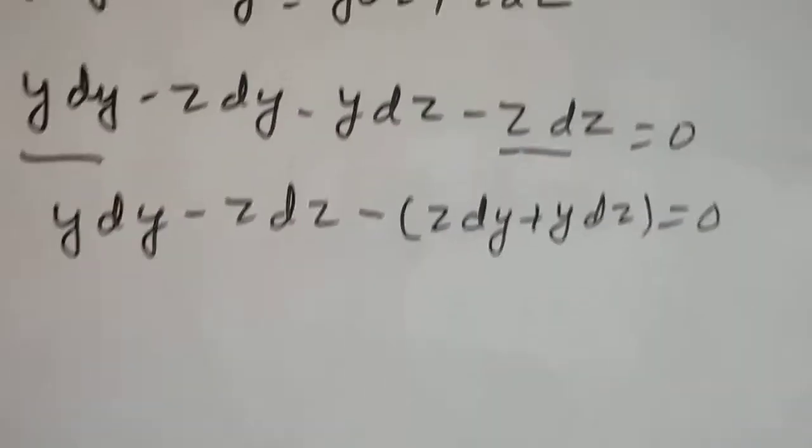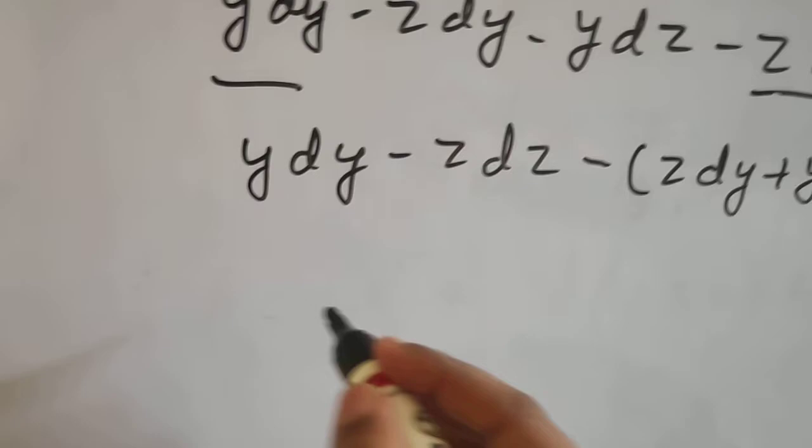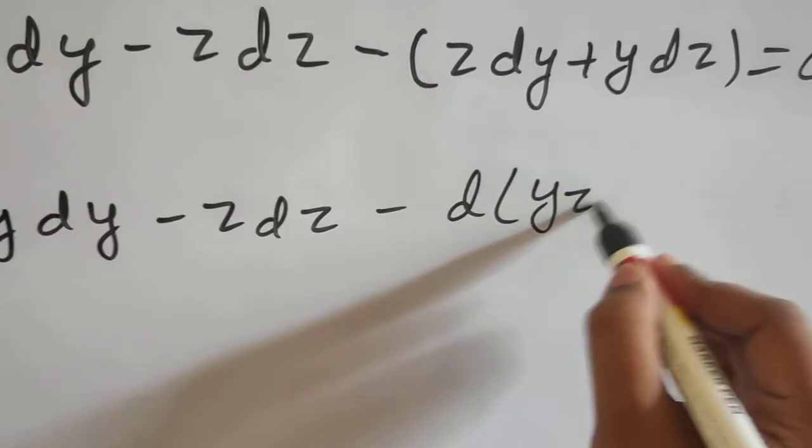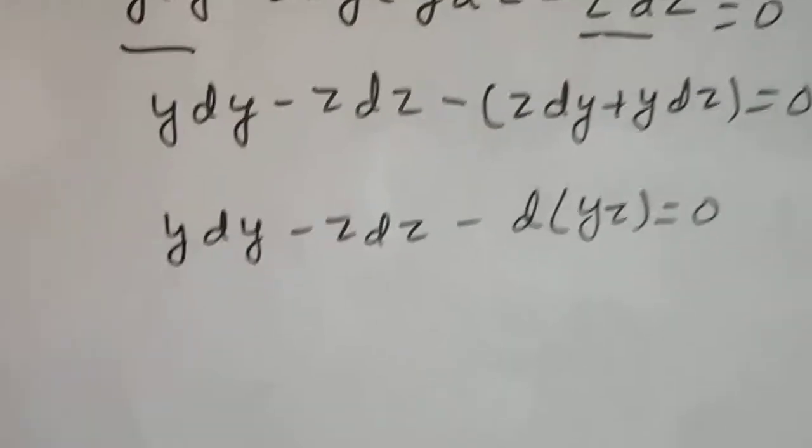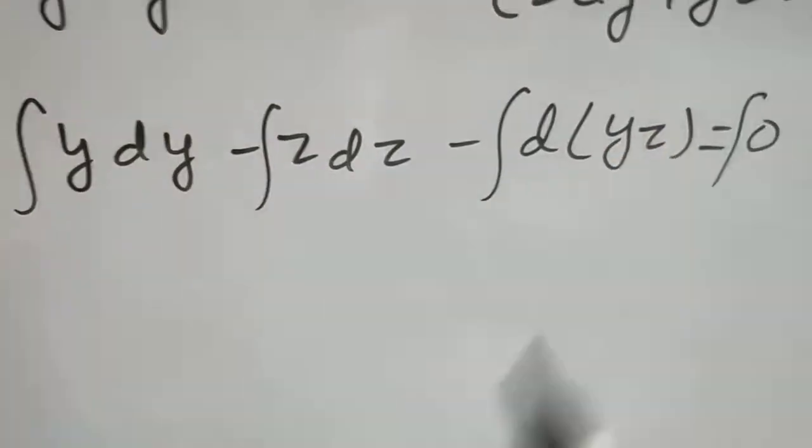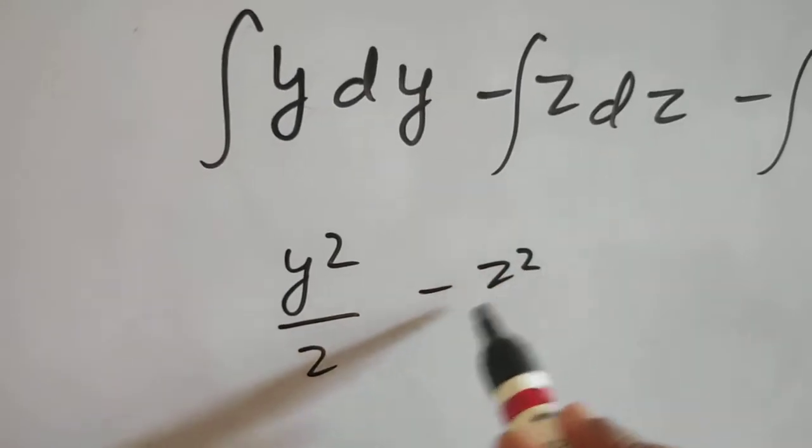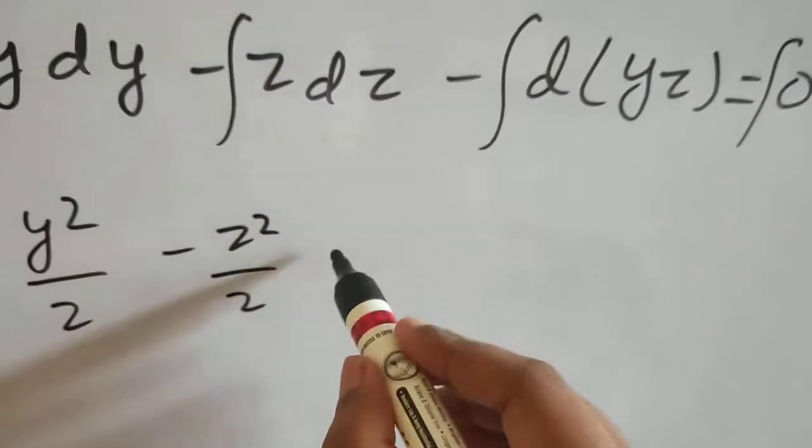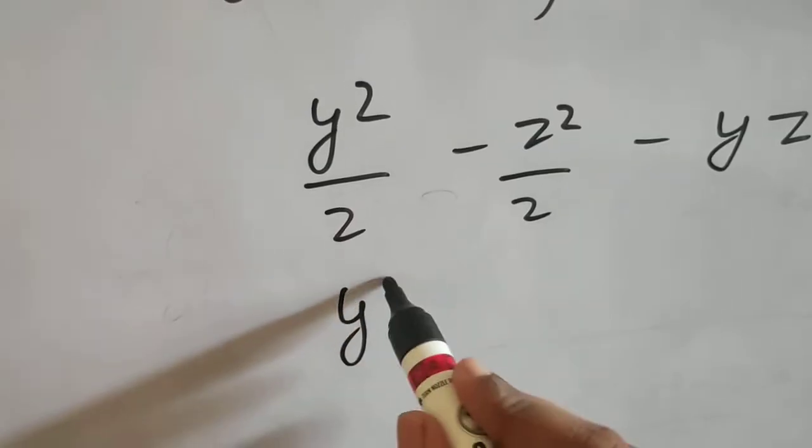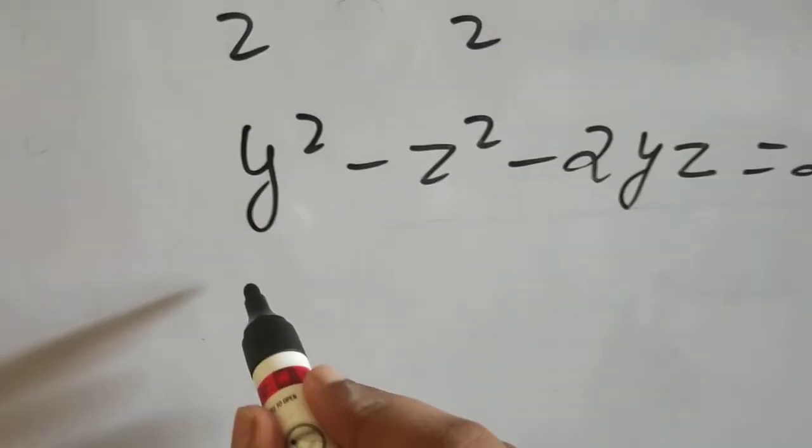Now, this is D of ZY or YZ, whatever you want to say. And this, as it is, so, YDY minus ZDZ minus D of YZ, ZY, whatever you say. Now, from here, we can integrate both sides. So if you integrate this, so, integration of YDY is Y square by 2. That of ZDZ is Z square by 2. That of D of YZ is simply YZ equals to, let's say, some constants. Y square minus Z square minus 2YZ equals to 2C.